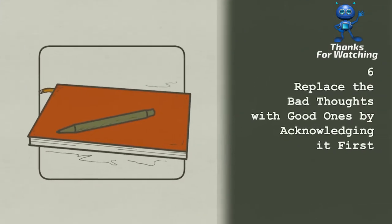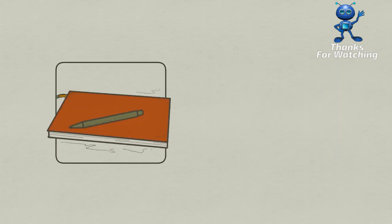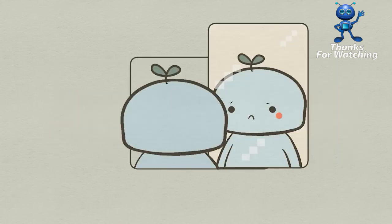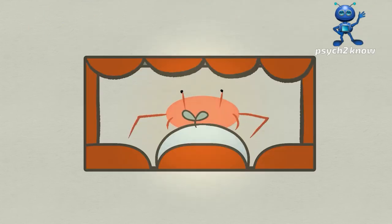Number six, replace the bad thoughts with good ones by acknowledging them first. It's best to express what's bothering us by talking to someone or journaling and sorting out these problems on paper. But if unnecessary worries find a way inside your mind, try acknowledging them and then consciously allow yourself to move on. This can be tricky for a lot of people. We tend to ruminate and worry about things that generally won't harm us in the long run.